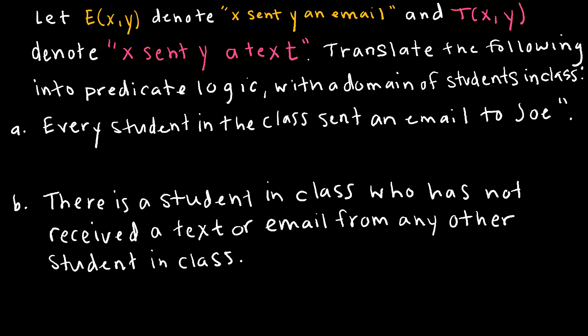So every student in the class, so every student, hopefully your math brain says for all students x, and in the class is just the domain, so we're okay with for all x, in the class sent an email to Joe. And so email was E(x,y), and we have to determine how we're going to write that in our sentence. So if we are okay with Joe having sent an email to himself, we can say for all x, E(x, Joe). Just like that because x is the student and everyone is sending their emails to Joe.